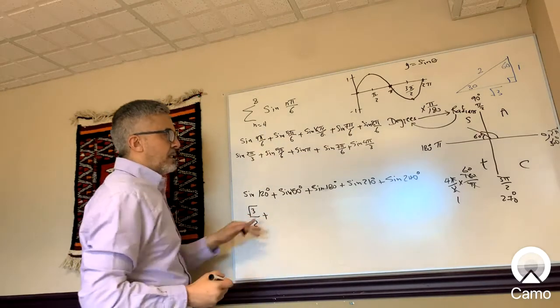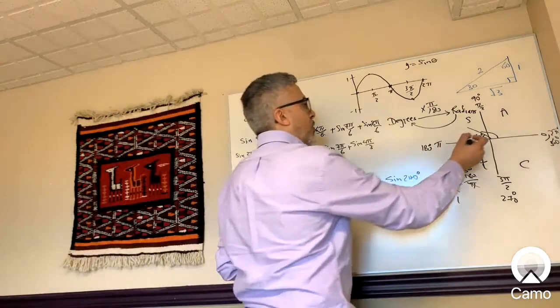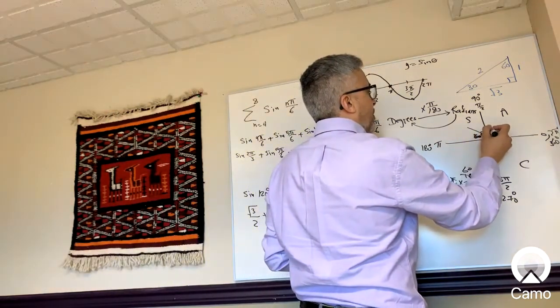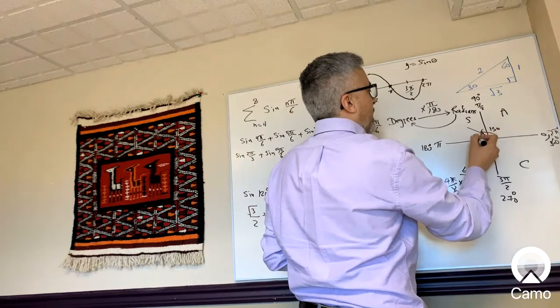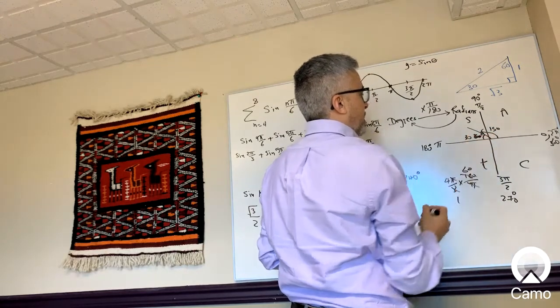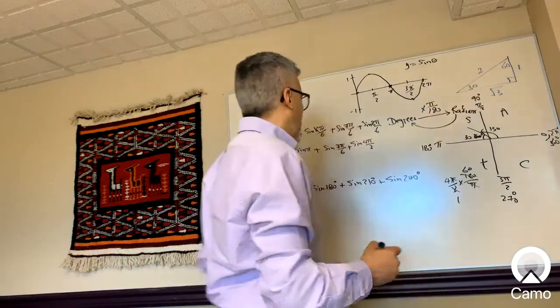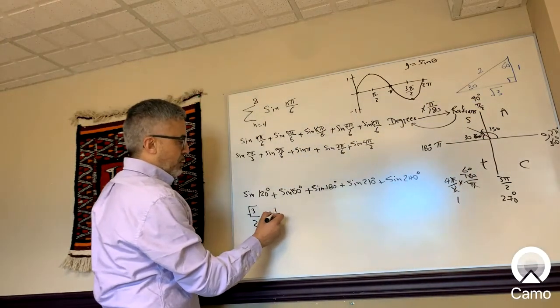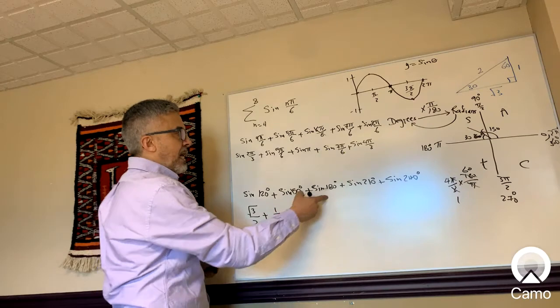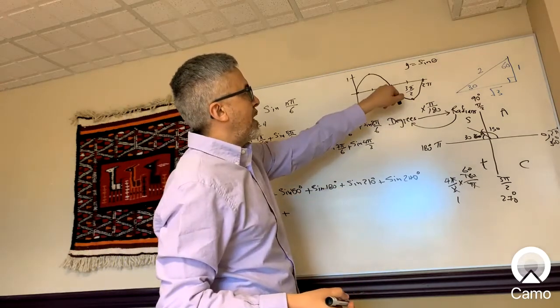Plus sine 150. If this is 150, the reference angle would be 30 degrees. Sine is also positive here. Sine of 30 is 1/2, so this becomes plus 1/2. Plus sine 180 is zero.